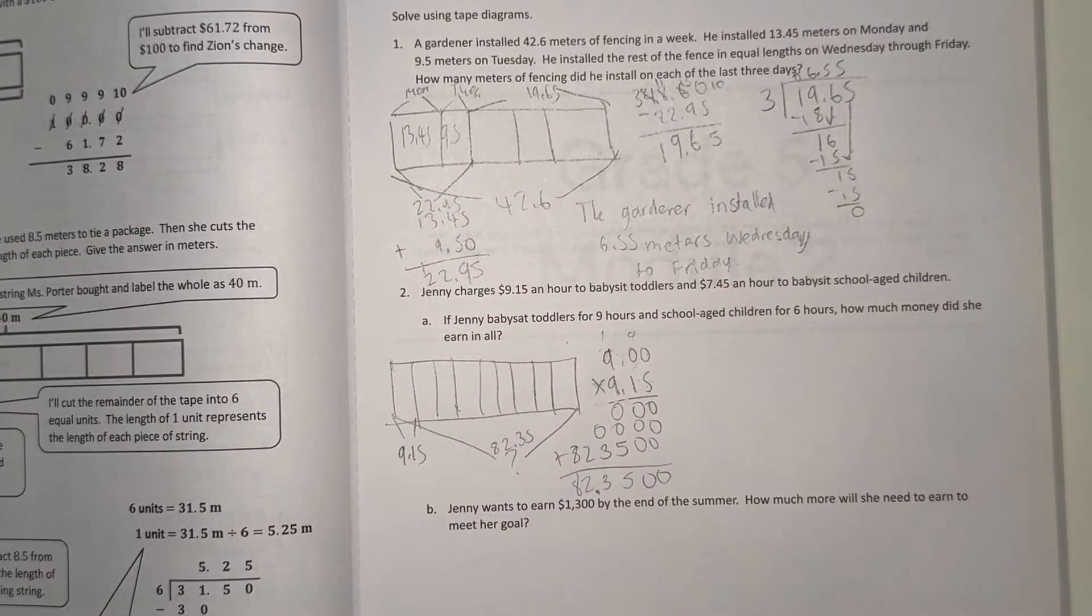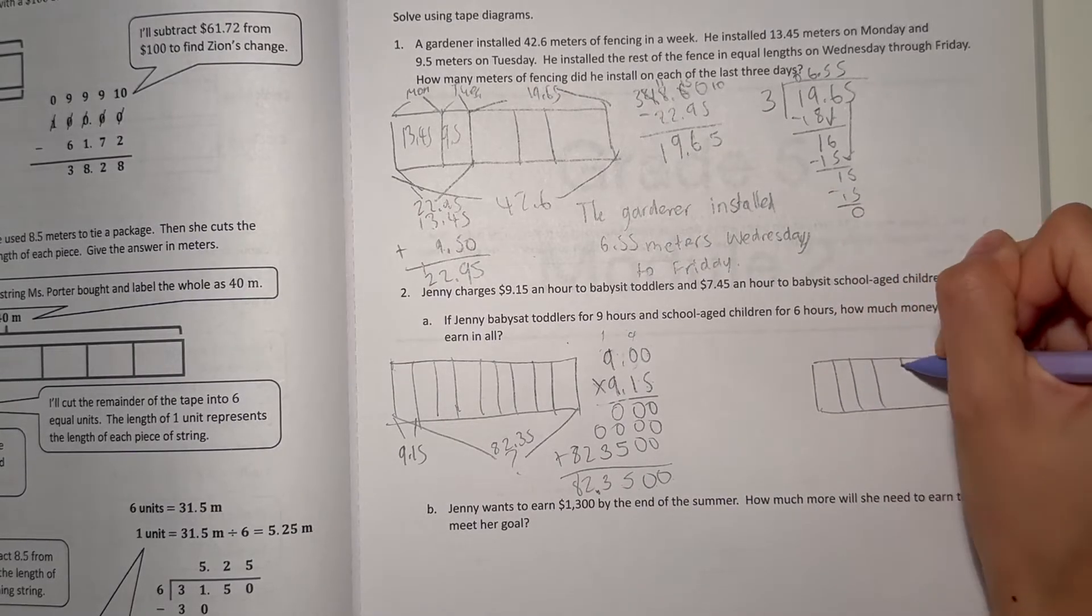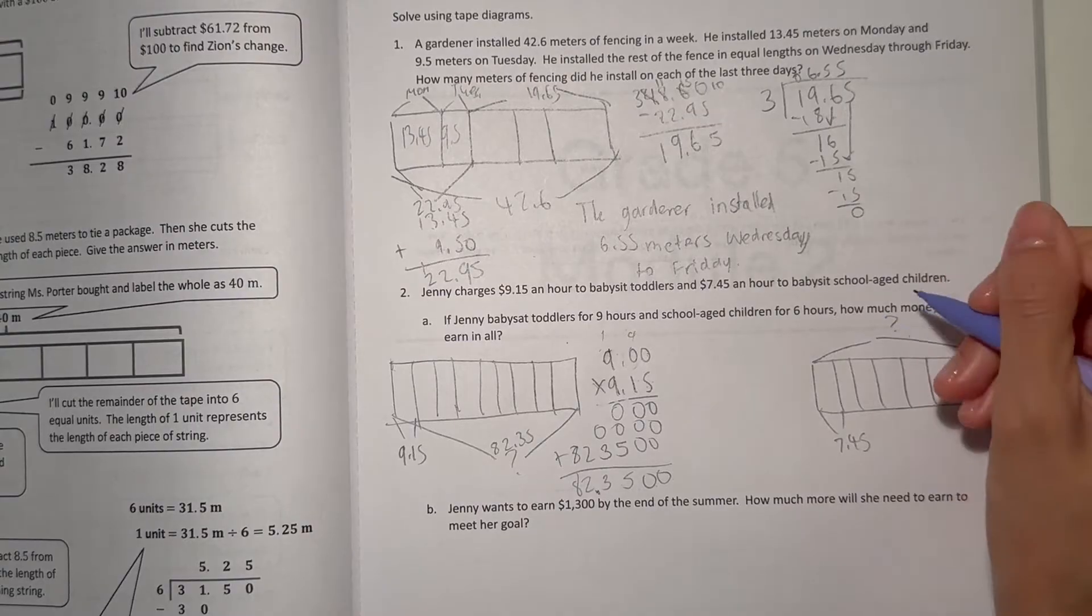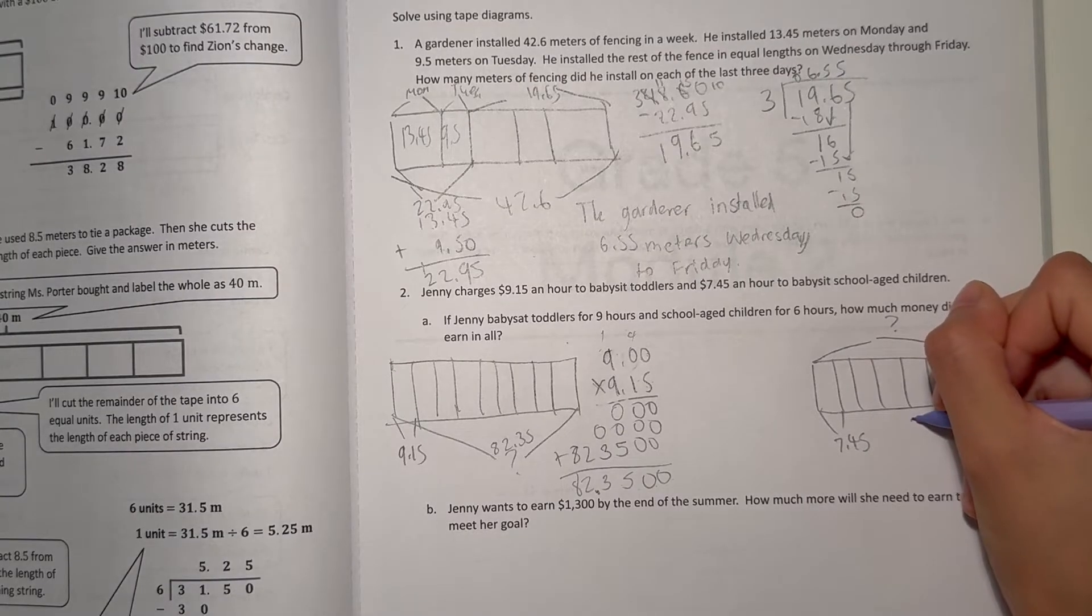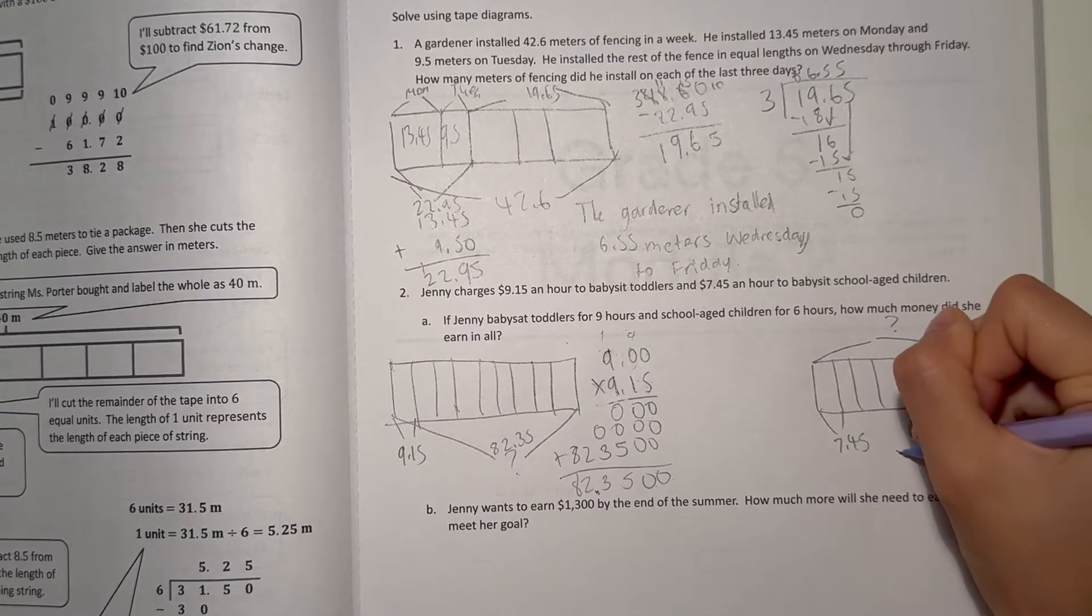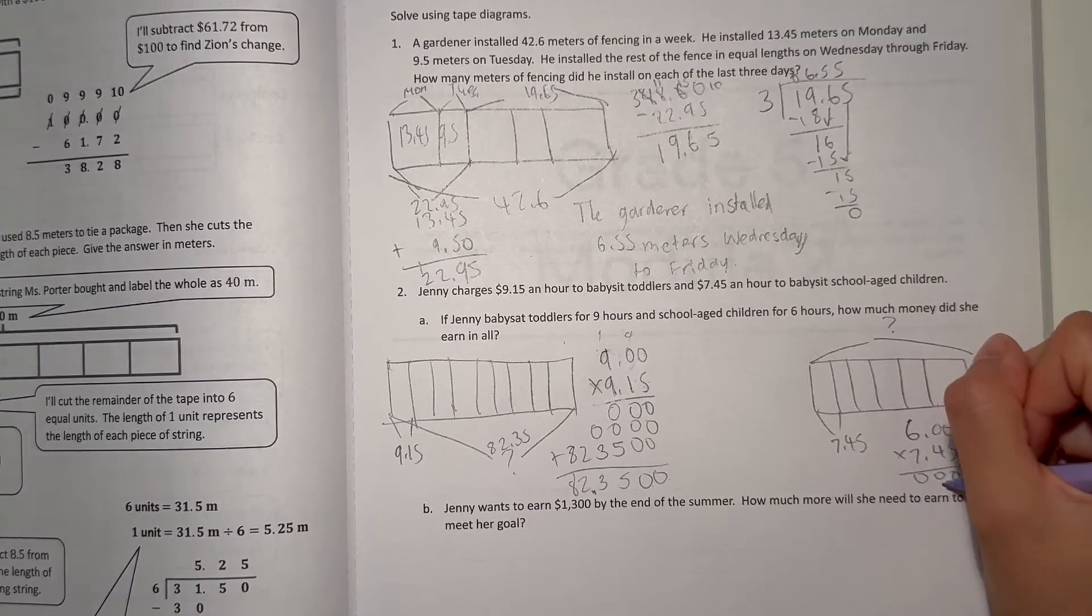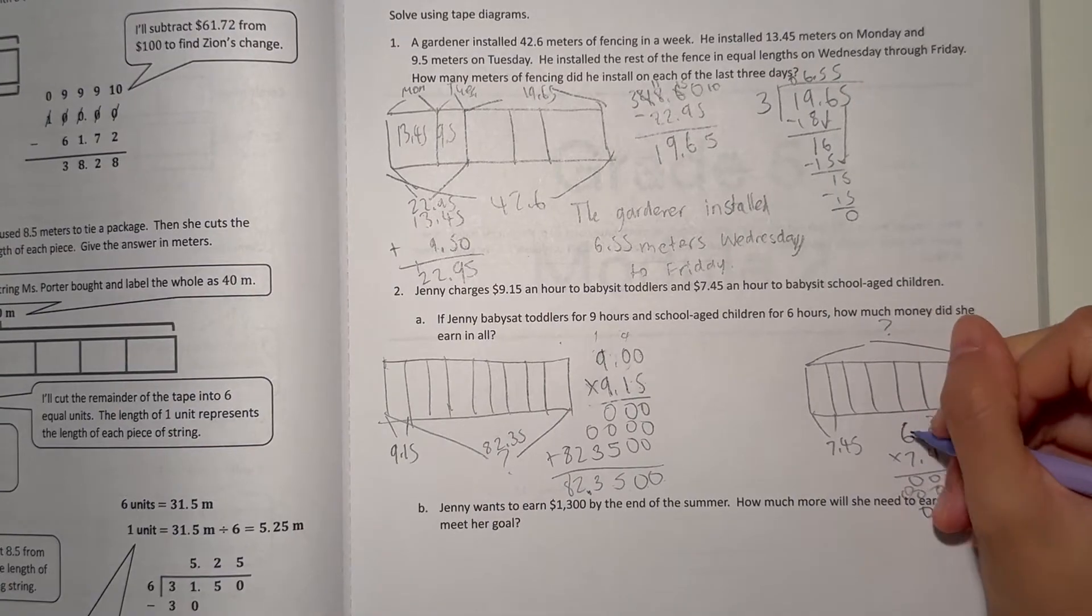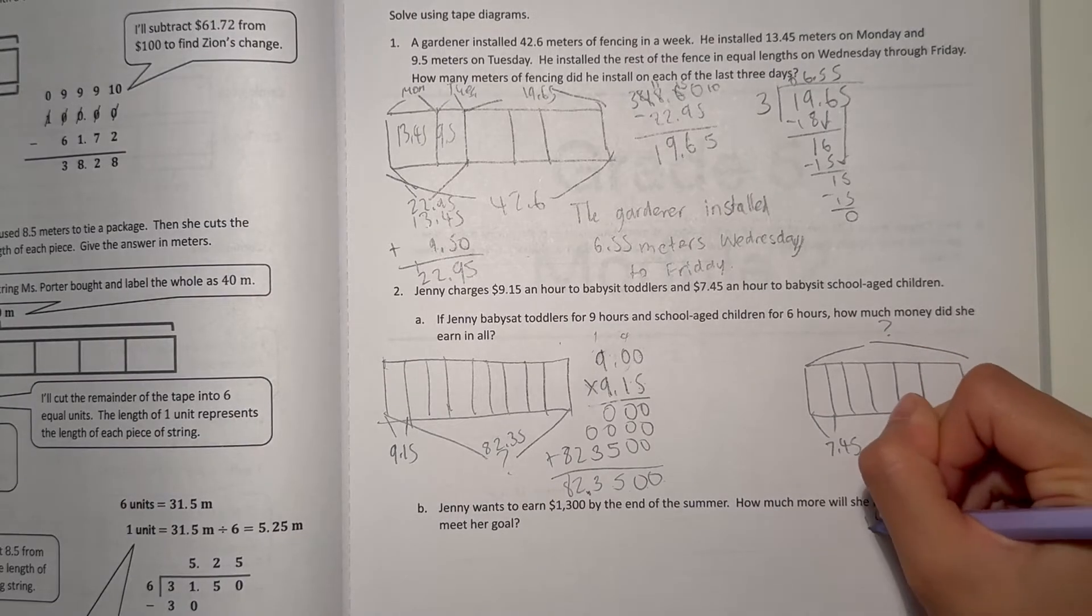But let's see school-aged children. She babysat them for 6 hours and each hour she makes $7.45. So how much money does she make in total? 6 times 7.45. 6 times 5 is 30, 6 times 4 is 24 plus 3 is 27, and 6 times 7 is 42 plus 2 is 44.